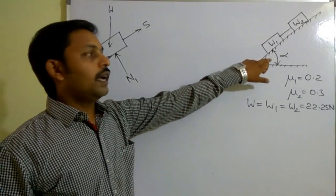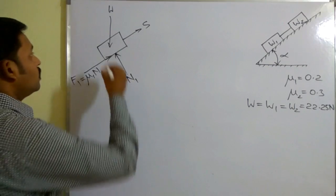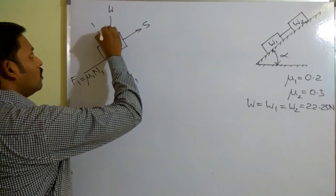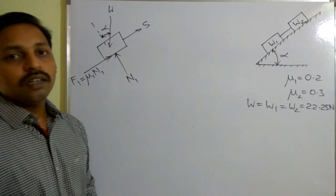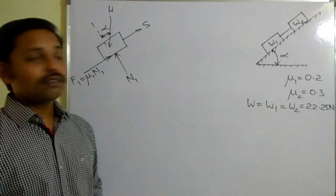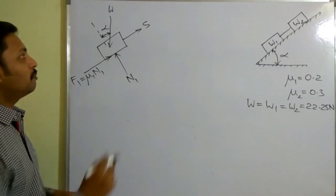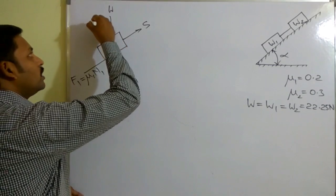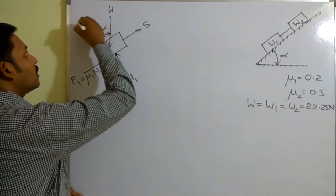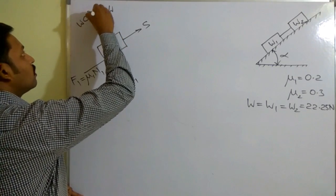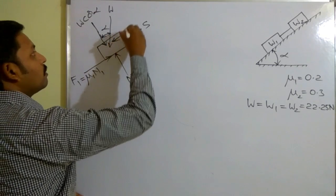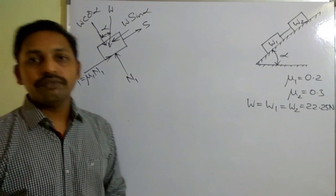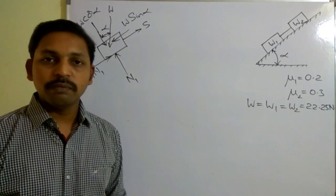Here the angle is alpha. For reference, you can consider my earlier videos. Now W is not along the plane or perpendicular to the plane, so I need to resolve it into two components. The component perpendicular to the plane is W cos alpha, and the component along the plane is W sin alpha.